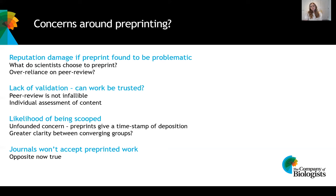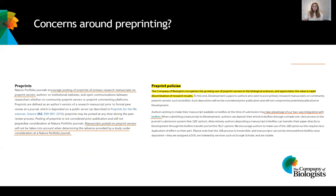The last concern is that journals won't accept preprinted work, and historically this might have been a valid concern. But in fact, most journals now accept work that has been preprinted — it can still be submitted to a journal for publication. For example, Nature portfolio journals encourage the use of preprints prior to submission, and some publishers, including the Company of Biologists, have a one-click dual submission approach. You can simultaneously submit your manuscript to a preprint server and for publication in the journal at the same time, really unifying preprinting with more formal journal publication.